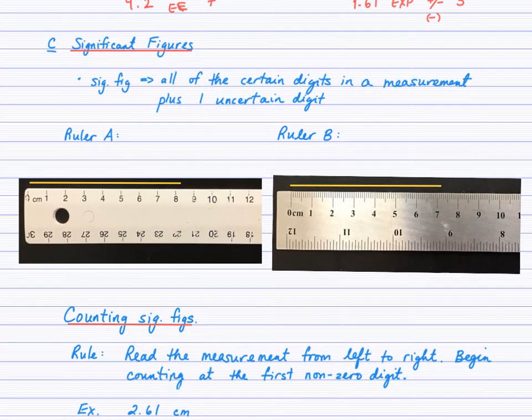Moving on to significant figures. Significant figures arise because in science we take lots of measurements. In math we're often counting, and when you count, that's an exact count — we count 16 people in a line, there's not 15 and a half. When we do measurements, measurements are always made using an instrument, some tool, and that tool has uncertainty. So measurements themselves are not exact. The digits we use are called significant figures or significant digits — all the certain digits in a measurement plus one uncertain digit.